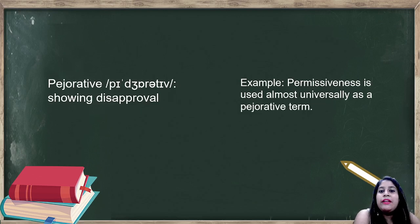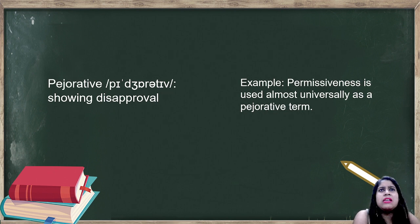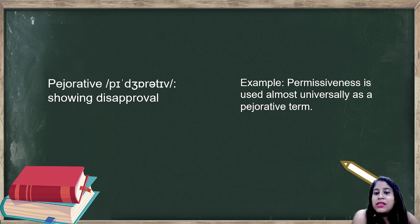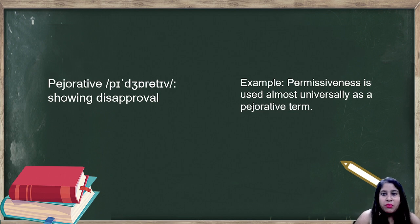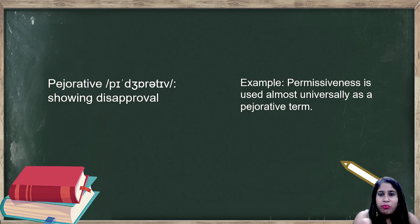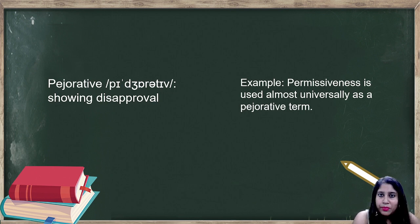Next word is 'pejorative.' Pejorative means showing disapproval — not approving of something or not agreeing with it. Example: permissiveness is used almost universally as a pejorative term. Permissiveness means whether you are allowing something to happen or not — basically about consent — and that is considered a universal yes or no for anything.